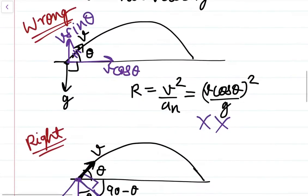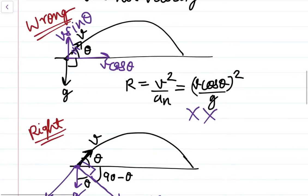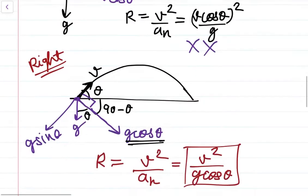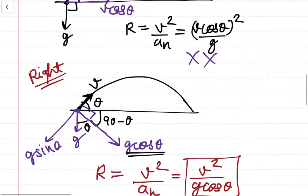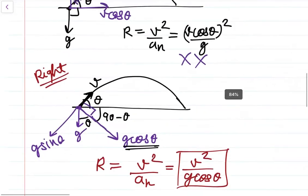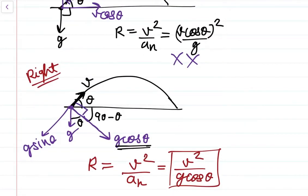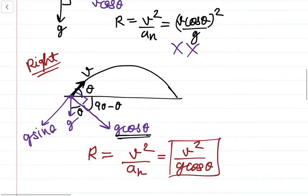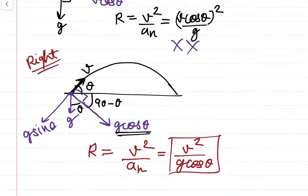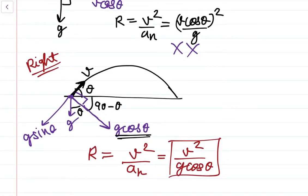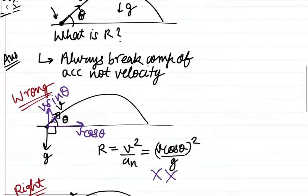I'll give you an example of how, if we break up the components of velocity, what answer comes versus if we do it the right way. If you do it the right way, there is so much difference — here it will come cos squared theta in the numerator, and here it is just cos theta in the denominator. So you can see the difference, so be careful with this.